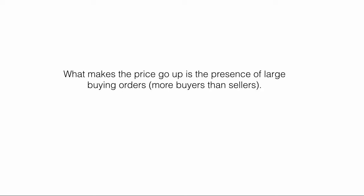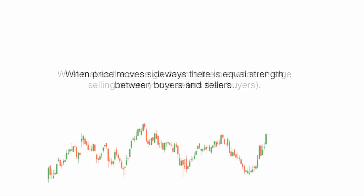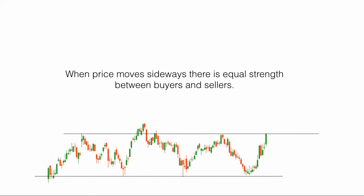What makes the price go up is the presence of large buying orders — more buyers than sellers. What makes the price go down is the presence of large selling orders — more sellers than buyers. When price moves sideways, there is equal strength between buyers and sellers.